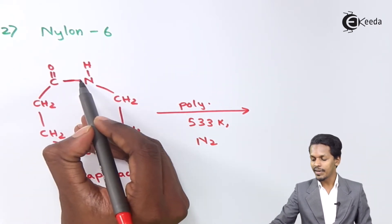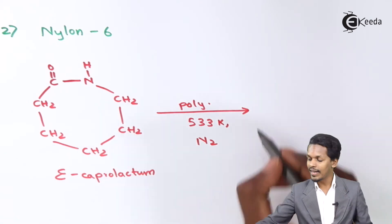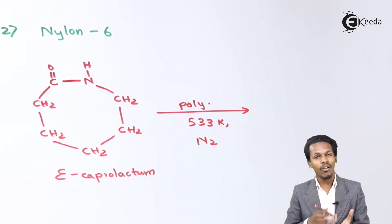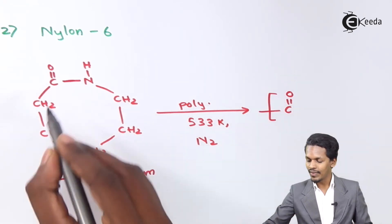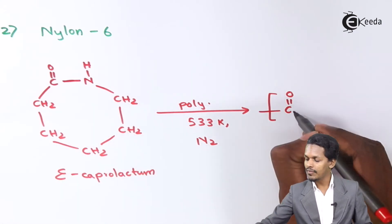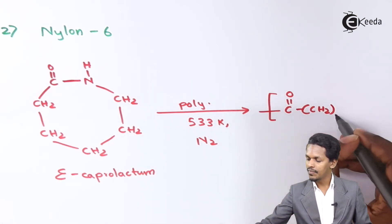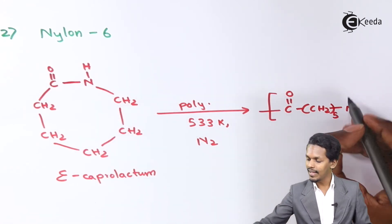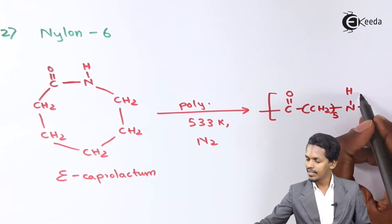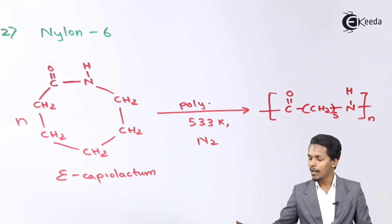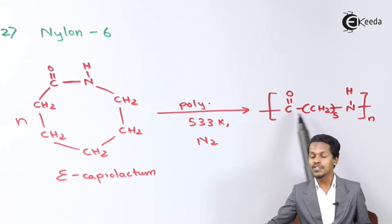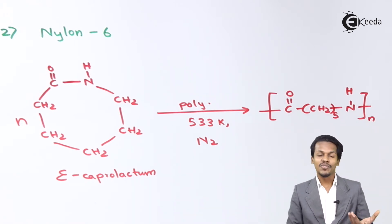When ε-caprolactam undergoes polymerization at 533 K in the presence of nitrogen, the bond between carbon and nitrogen in the ring breaks. The repeating unit obtained is -C(=O)-(CH2)5-NH-, and with N moles of ε-caprolactam the resulting polymer is nylon 6, named so because it has six carbon atoms. Nylon 6 is a fiber.